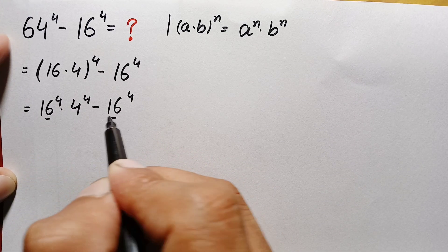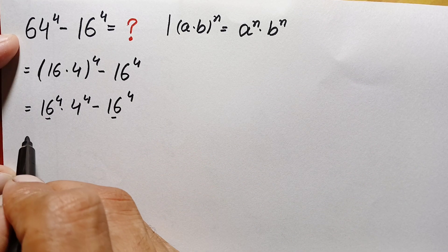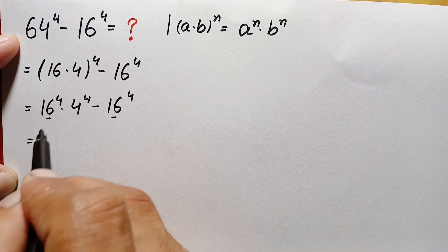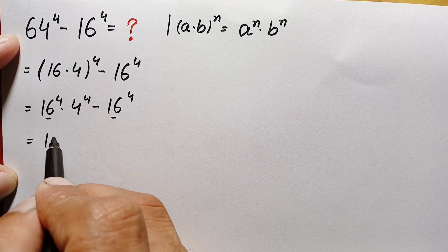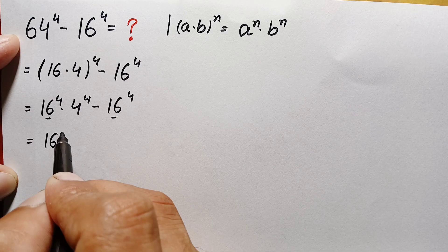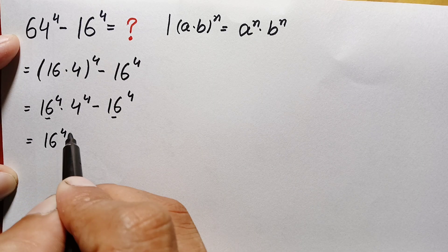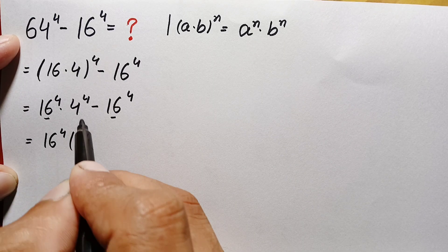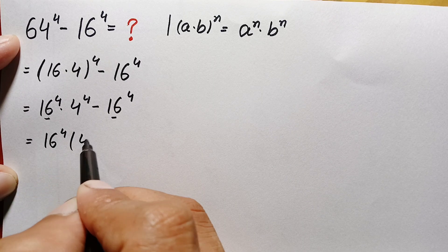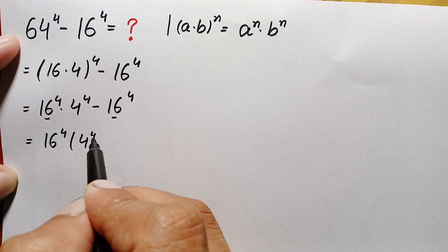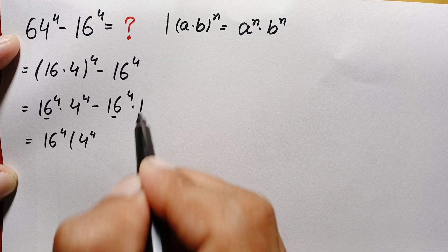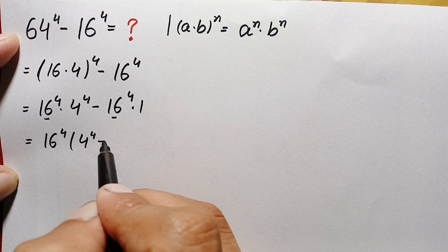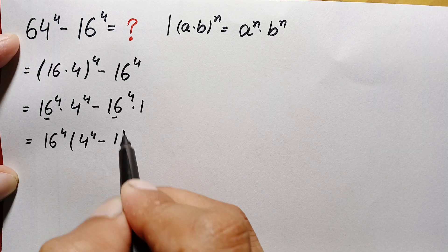Now 16 raised to power 4 is common in both terms, so we take it out. This becomes 16 raised to power 4 times (4 raised to power 4 minus 1).